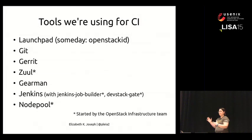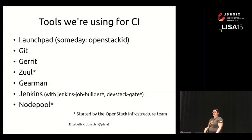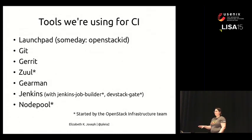The tooling we use for CI includes Jenkins, which we're hoping to get rid of because we use it basically just as a shim to pass on jobs — we don't use any Jenkins plugins, it's really just a queue holder. We use Launchpad for authentication, which is a historical thing we're stuck with until OpenStack ID is ready. We're using Git, and we have mirrors of all repositories to GitHub, though git.openstack.org is our canonical resource. Gerrit is used for code review — it's a large Java project developed by Google, used for Android and Chromium.